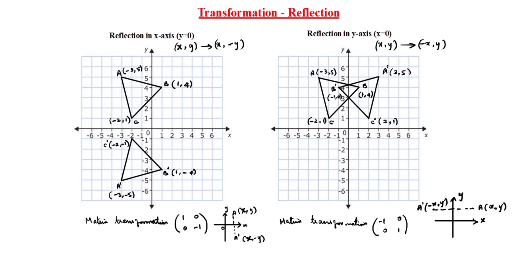Same way, b is 1 comma 4. x stays as 1, y becomes minus y so minus 4. So b reflected is 1 comma minus 4.